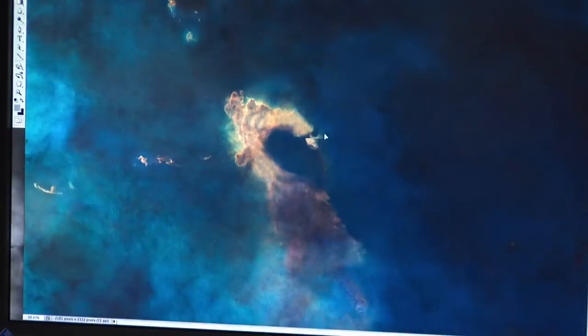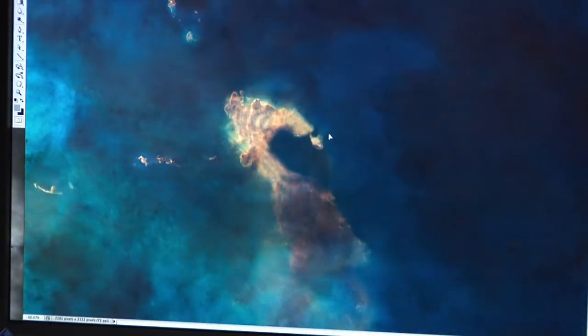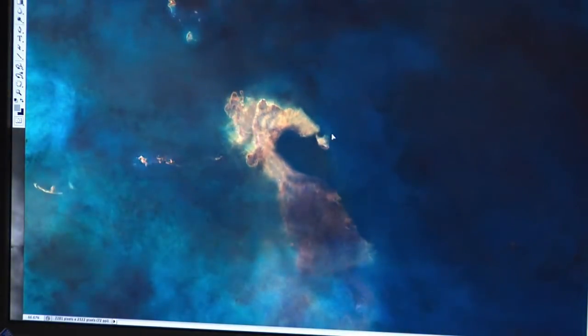If you're looking at a real three-dimensional object, you have the opportunity to go around it to see all sides of it. In this case we're only seeing one side of this thing, so we can only infer what's around the corner.